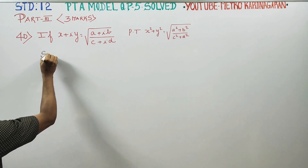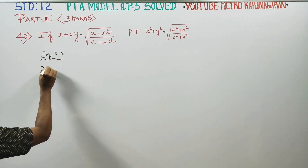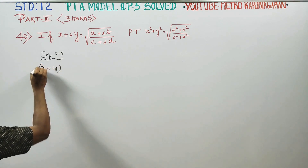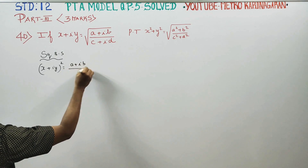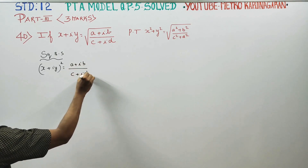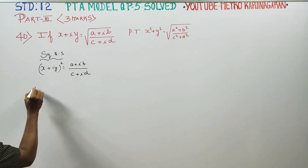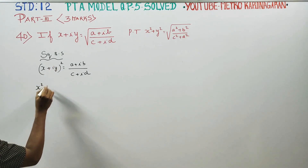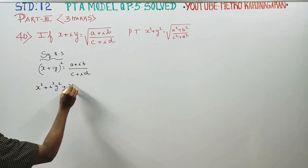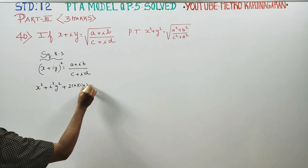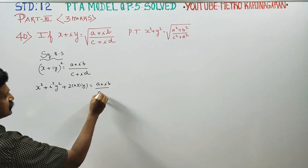First of all, I am going to square on both sides. Squaring on both sides, there is x plus iy whole square. That is equal to square root of (a plus ib) by (c plus id). Squaring both sides, this square root becomes: what is a plus b whole square formula? A square plus b square plus 2ab. So 2 into a into b is equal to this, which is equal to (a plus ib) by (c plus id).